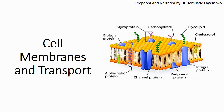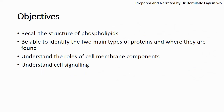In today's video we will be starting with Cell Membranes and Transport, which is Chapter 4 of the AS Biology Syllabus. The objectives of this video are to help you recall the structure of phospholipids, identify the two main types of proteins that are in the cell membrane, and understand the role of cell membrane components in cell signaling. I hope that you're excited — we'll try to keep this as short as possible, but please make sure you pay attention.